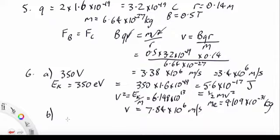Then, quickly, the second part of that: we have radius of 7.5 centimeters. And again, B Q V equals M V squared over R. So B equals M V over Q R.